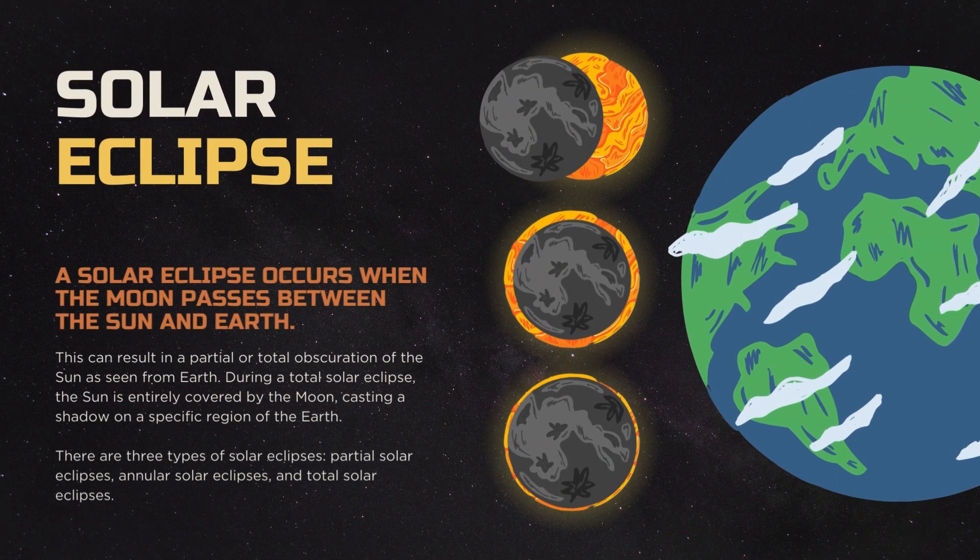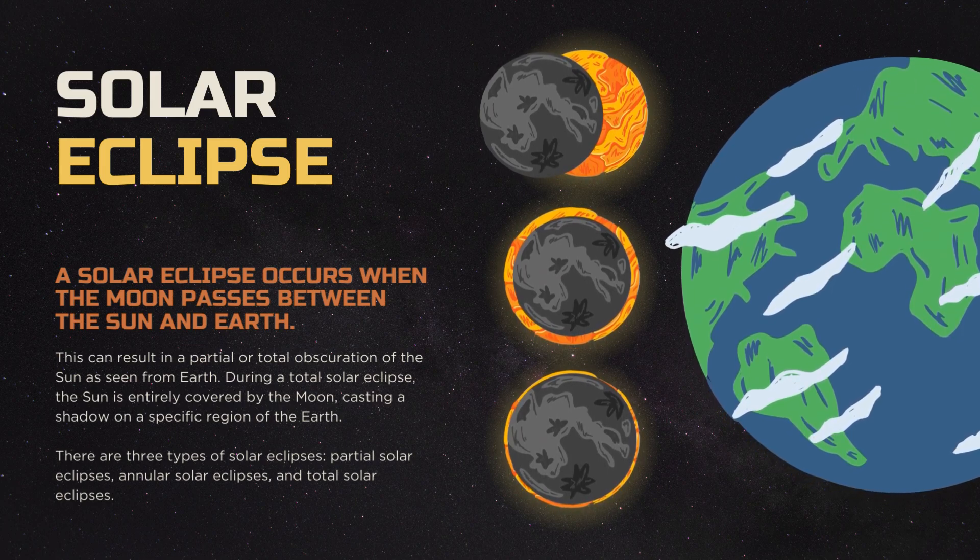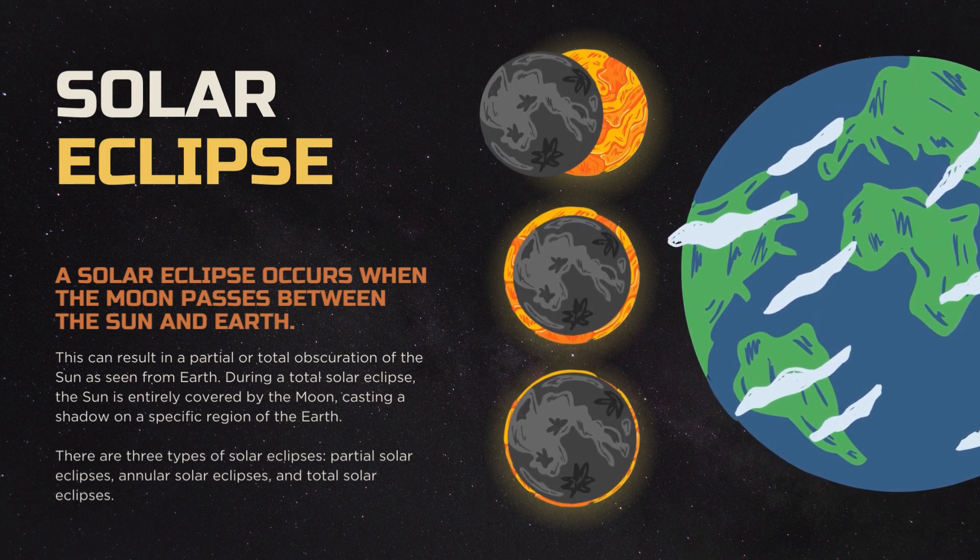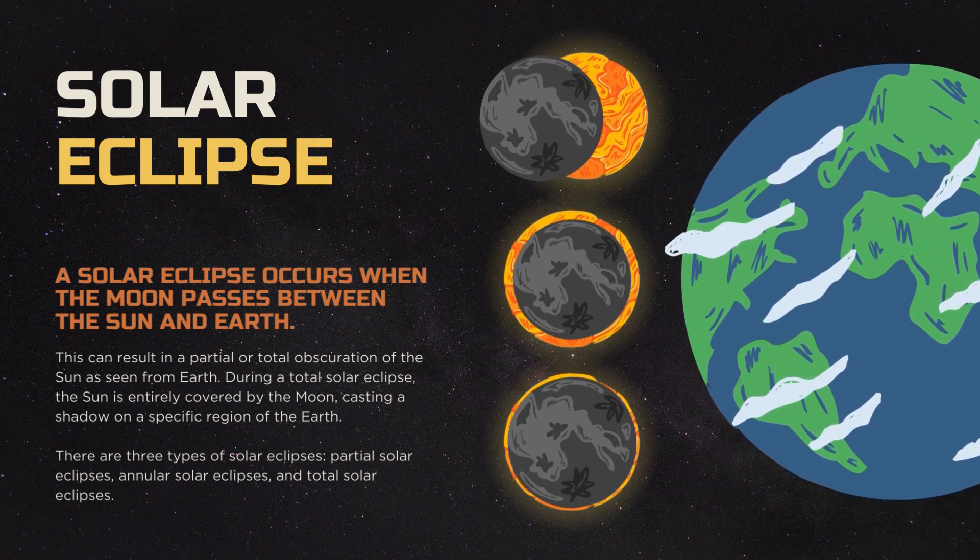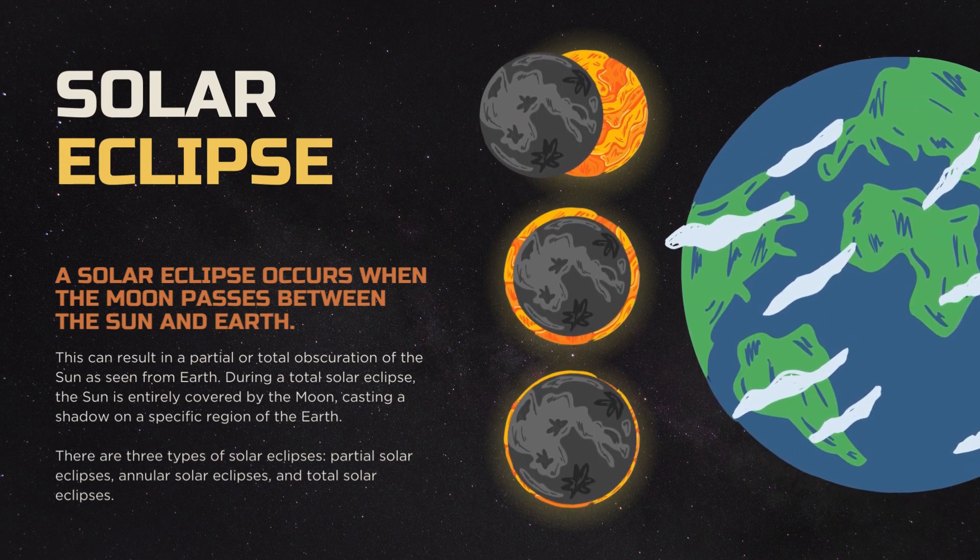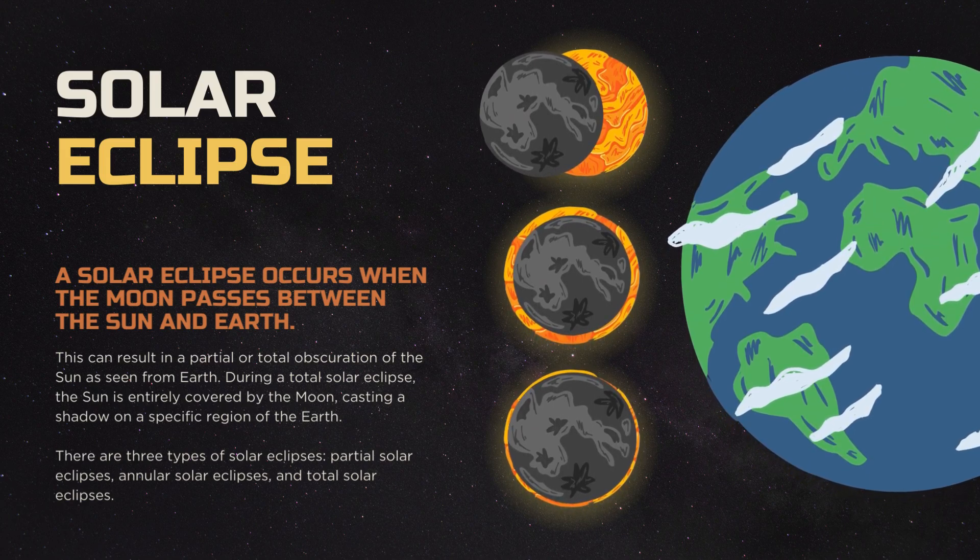So what is a solar eclipse? A solar eclipse occurs when the moon passes between the sun and the earth. This results in partial or total obscuration of the sun as seen from earth. During a total solar eclipse, the sun is entirely covered by the moon, casting a shadow on a specific region of earth.